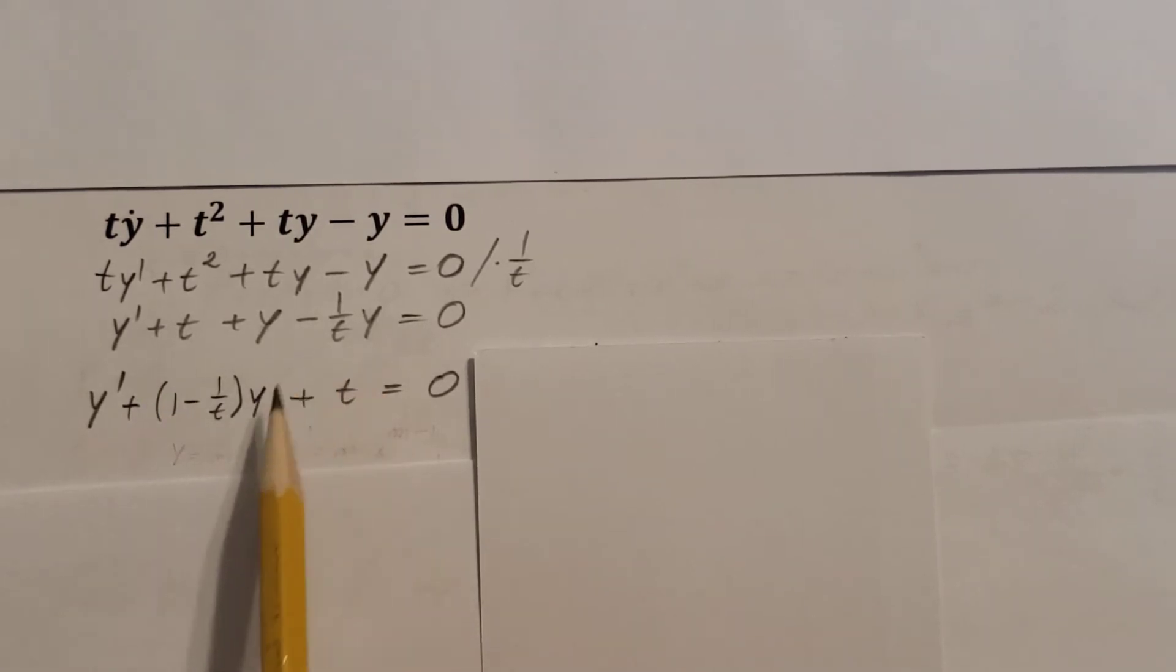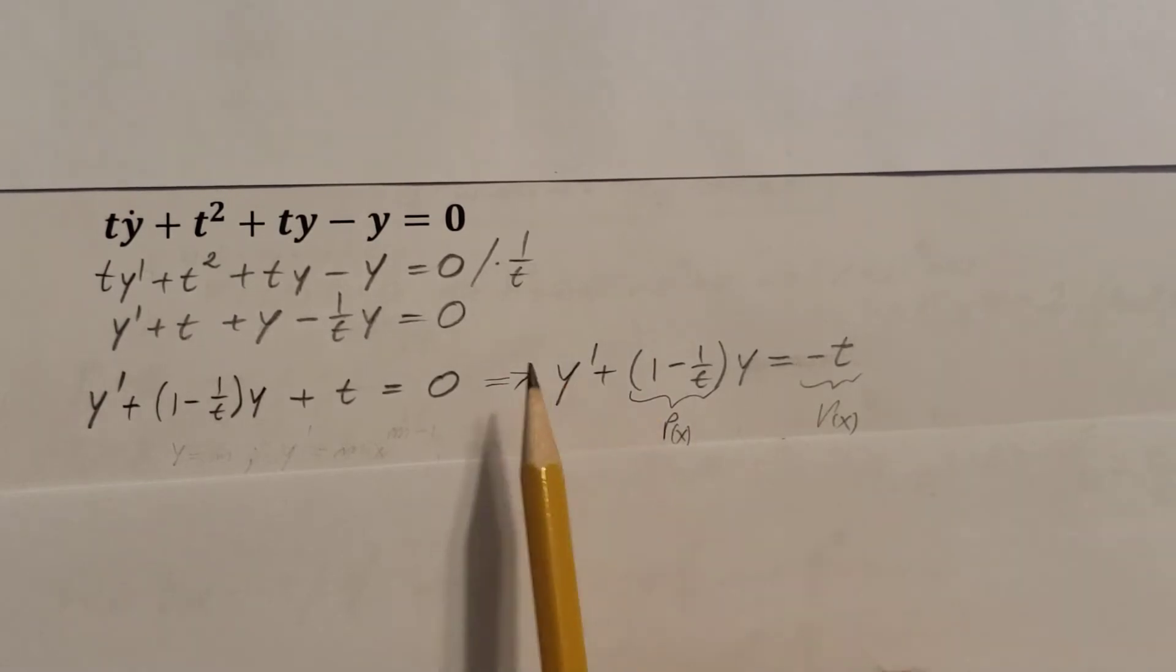Now all we have left is this t. I don't like this t on this side, so usually when we have this, it's good to throw it on the other side of the equation sign.